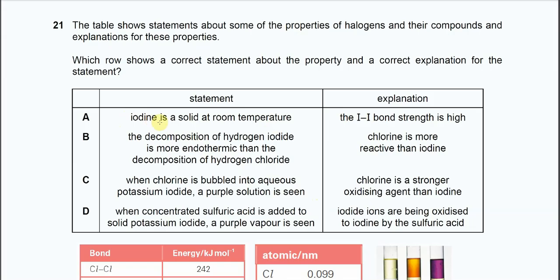Iodine is a solid at room temperature. Yes, it's true. But the explanation is wrong. Iodine is a solid compared to others like chlorine is a gas, bromine is liquid, because iodine is the larger size. So the IDID means the instantaneous dipole, induced dipole, between the iodine molecules is stronger. So therefore, it can be a solid at room temperature. It's because of the intermolecular force, not the bond energy.